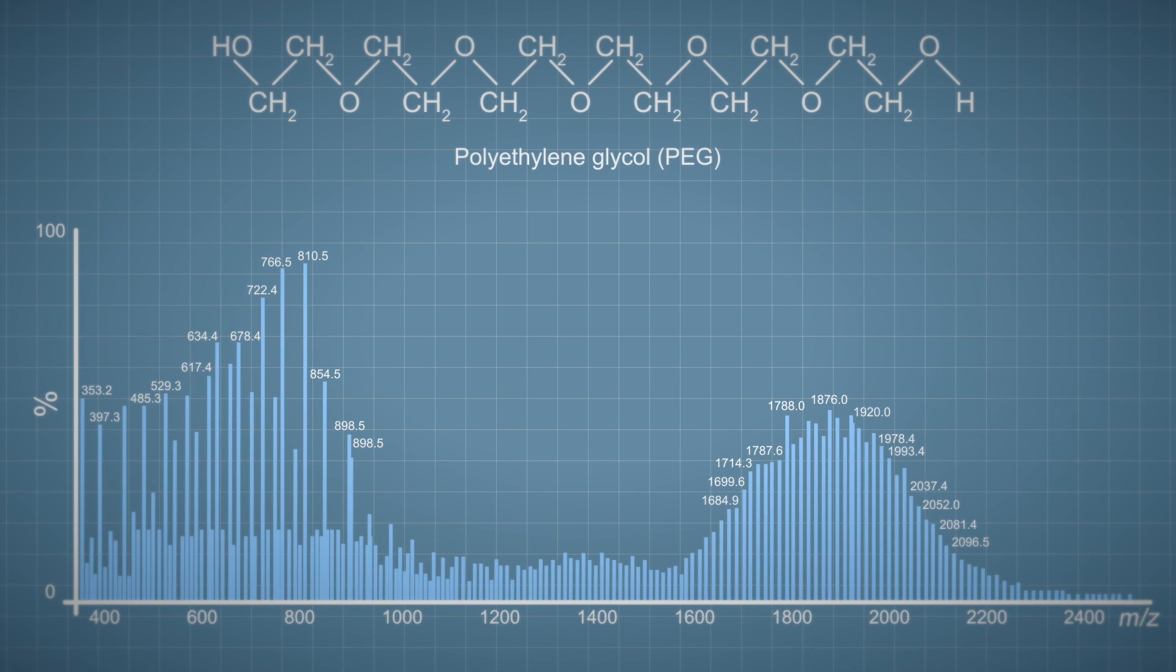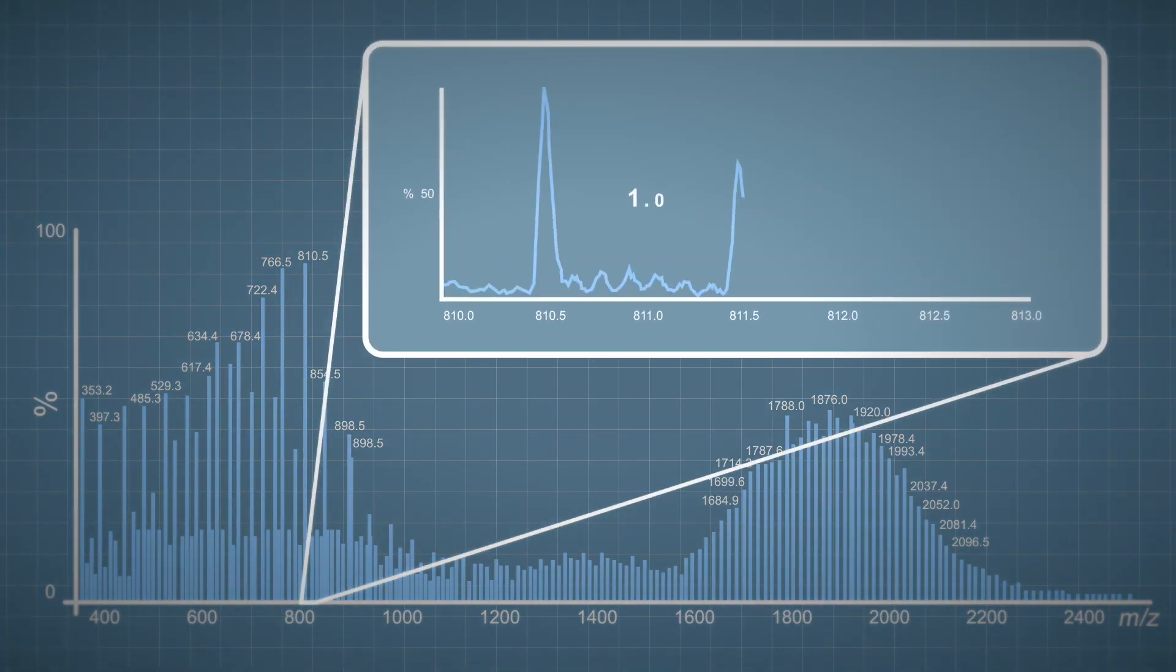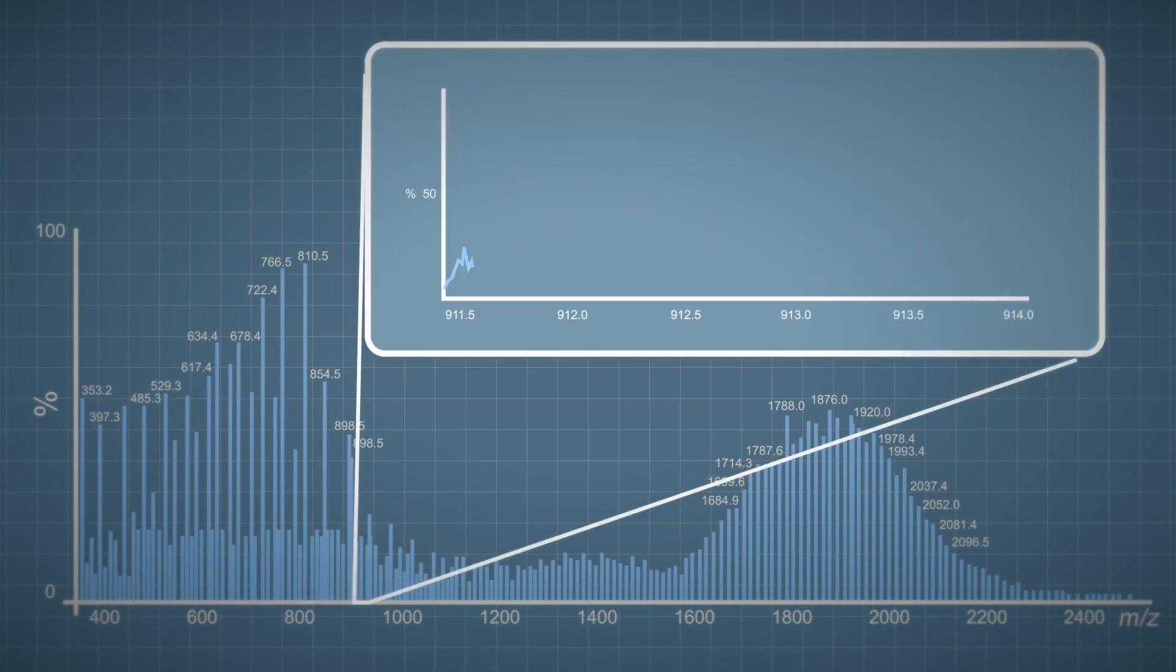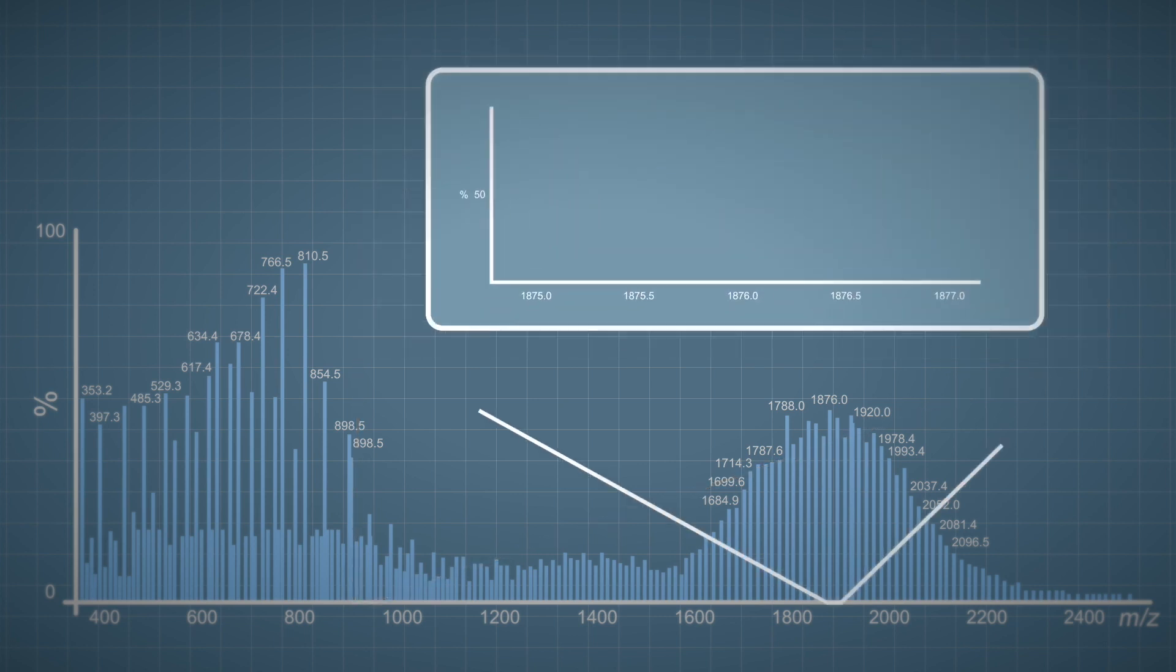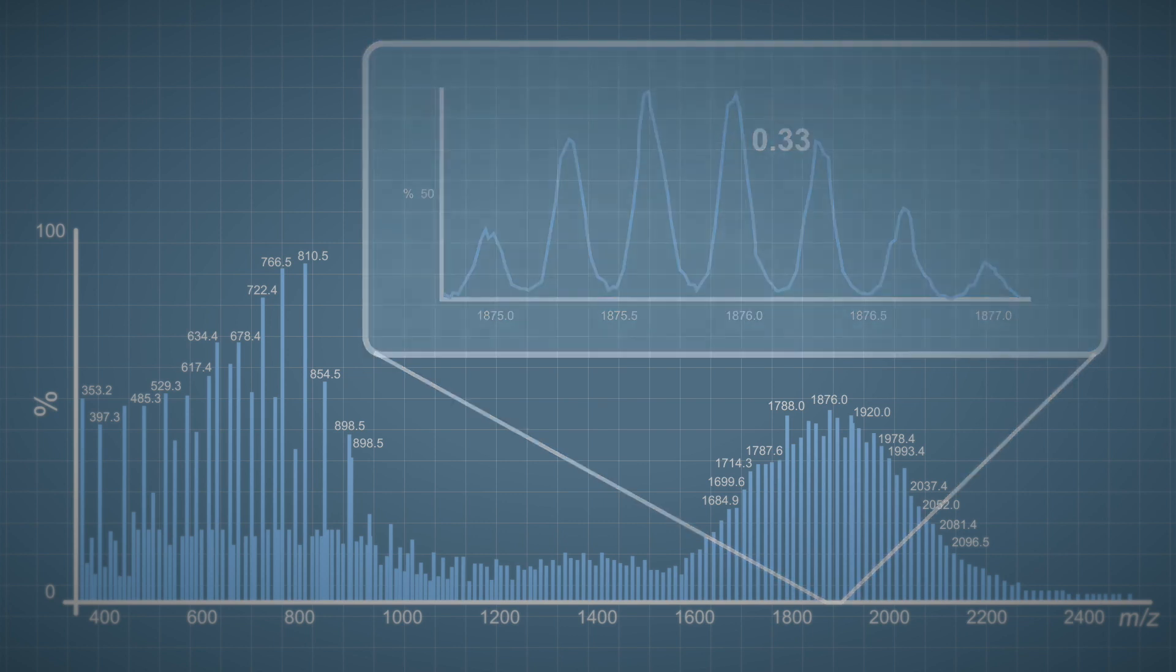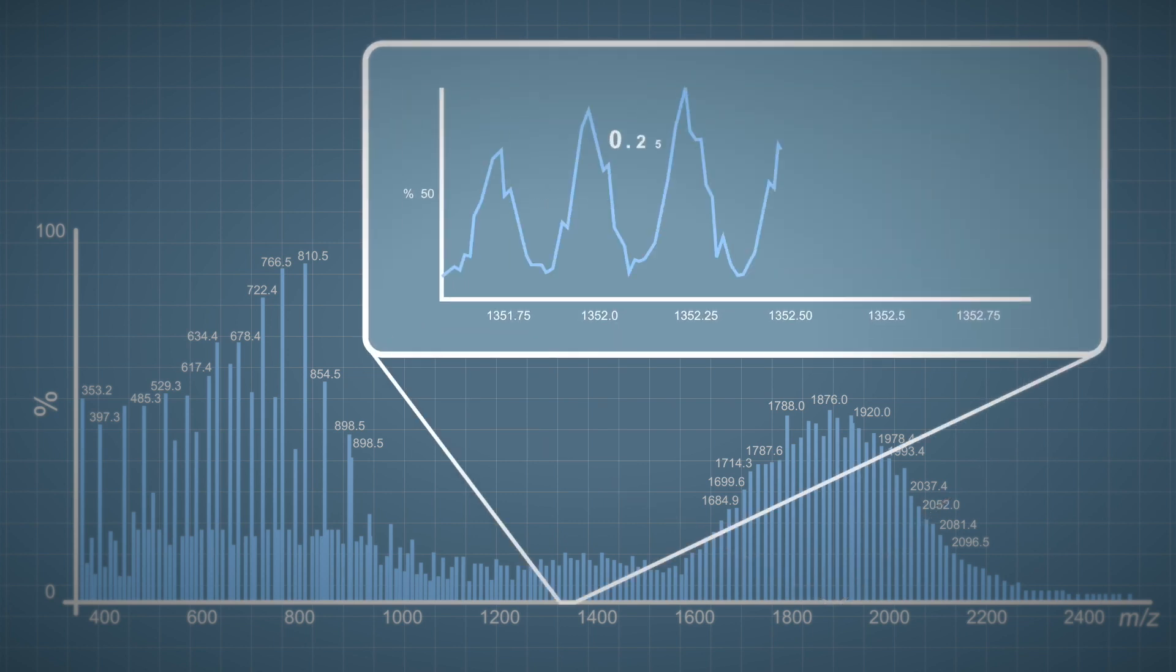If we take a closer look at some of the ion clusters within the spectrum we can start to learn more about the different charge states present. Here the ions are one unit apart so they must have a single charge whereas here the gap is half a unit so they must have a double charge. In fact in this particular spectrum we can distinguish charge states from one plus all the way up to seven plus.